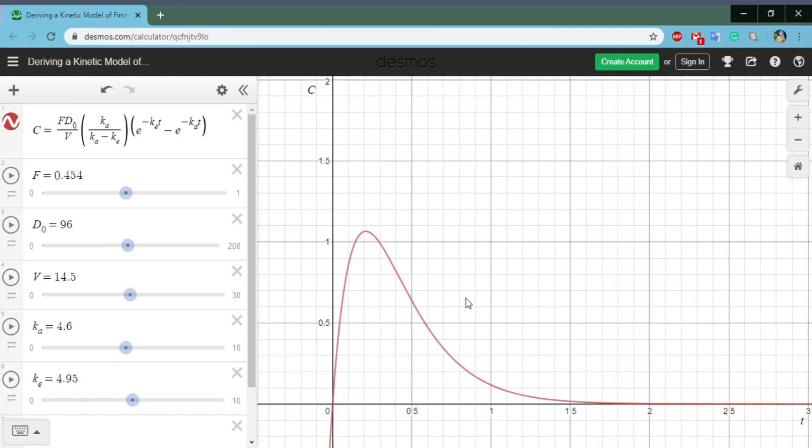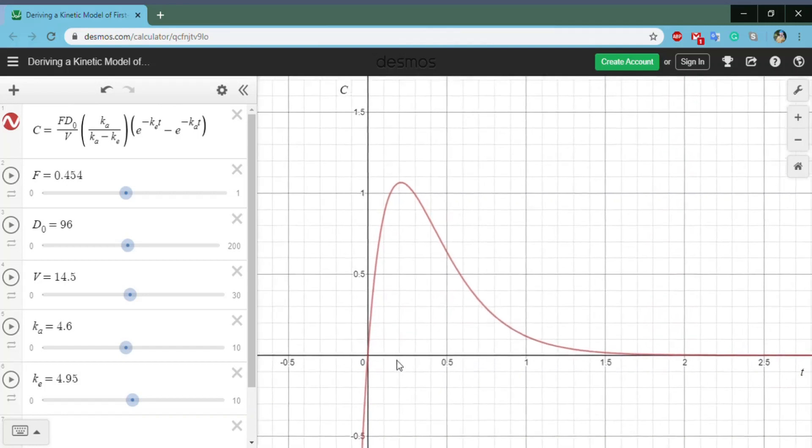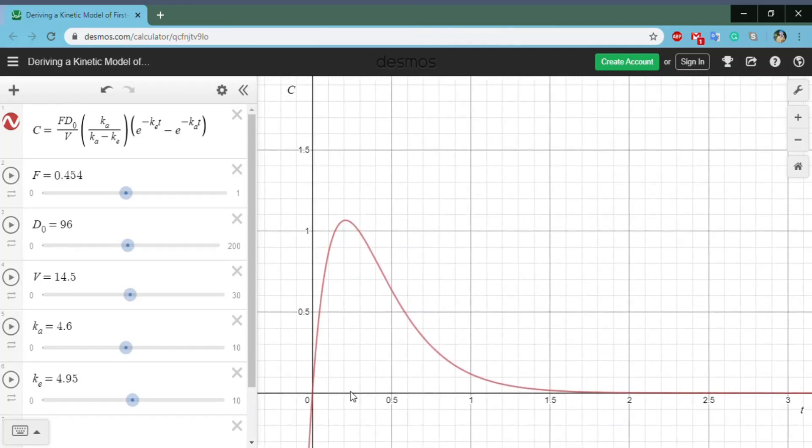In this case, we only want to know values for T that is greater than 0, because the negative side doesn't really make much sense. But we can see that we can change these parameters.